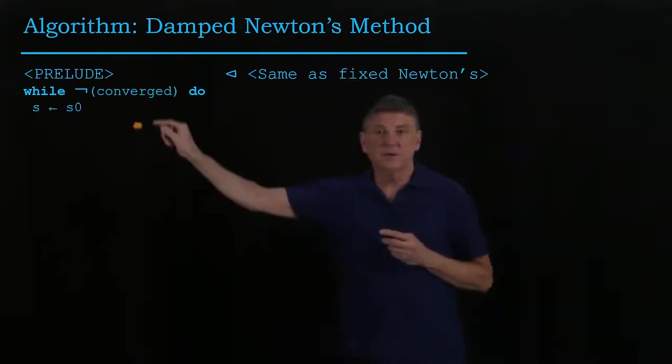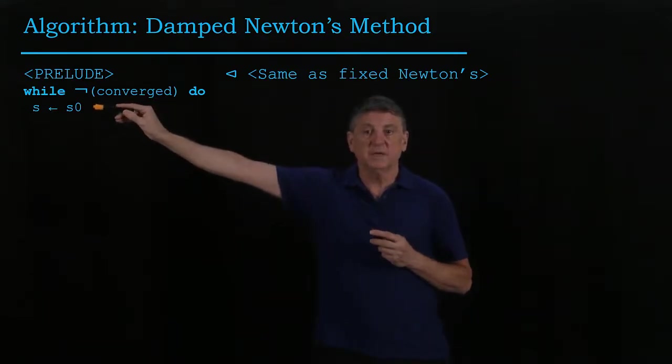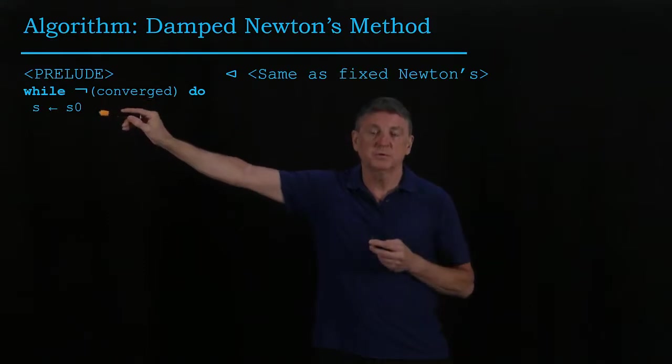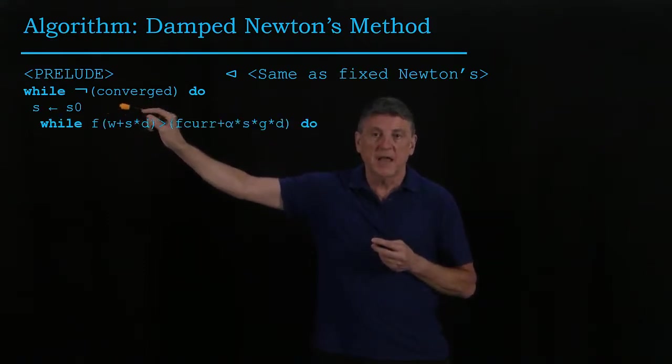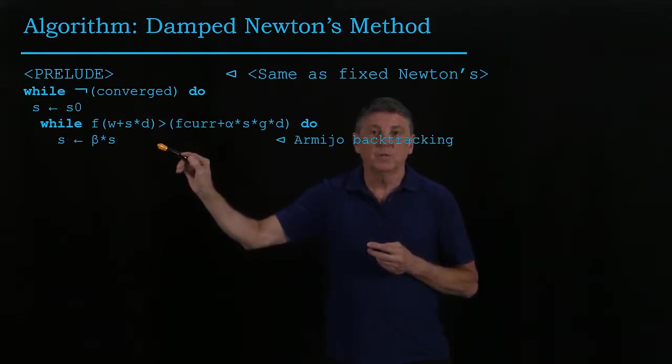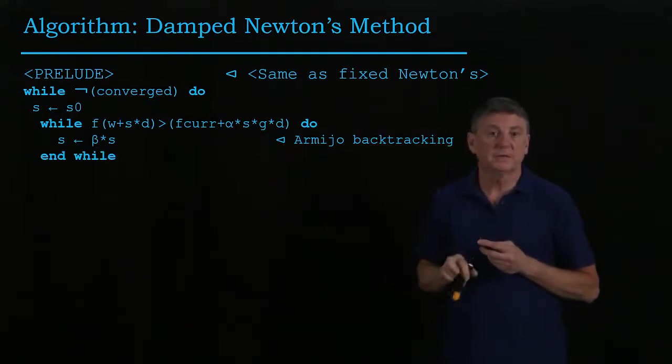And now what we'll do is we'll say our step size will be the one that's provided by a user. So this requires some user intervention. And then we'll do Armijo backtracking to figure out what the best step size is for this iteration.